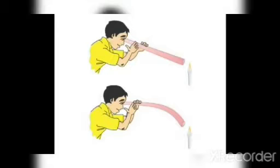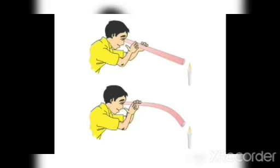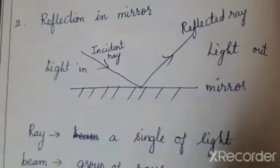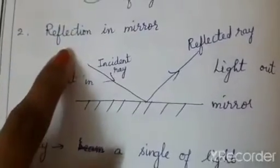Now look at this image. A person uses a tube or pipe to watch a candle. The pipe has two open ends — one for the eyepiece and the other end aimed at the candle. When he looks through a straight pipe, the candle is visible. But when he tries to look through a curved pipe, the candle is not visible. This again tells us that light always travels in a straight line.